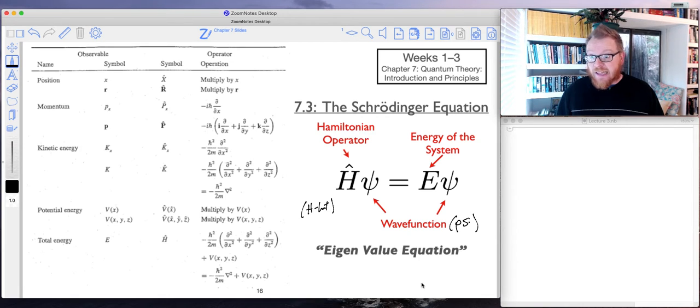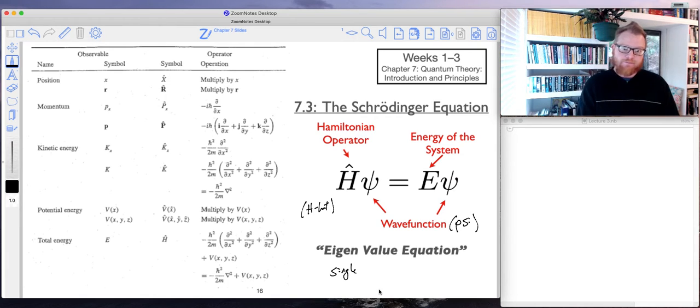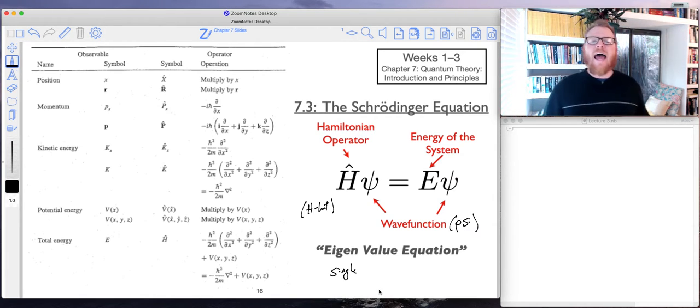So the Schrödinger equation is what we call an eigenvalue equation. And as I mentioned in the previous lecture, there's a lot of German language influence in quantum mechanics. So 'eigen'—that's Deutsch for 'single'—single-valued equation.